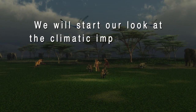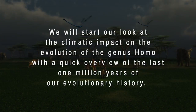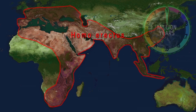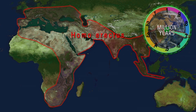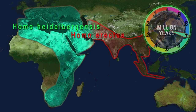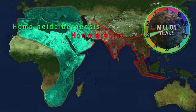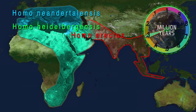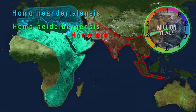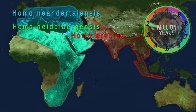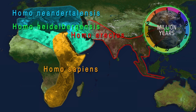We will start our look at the climatic impact on the evolution of the genus Homo with a quick overview of the last 1 million years of our evolutionary history. Around the 1 million year mark we would find Homo erectus ranging across parts of Africa into Europe and Asia. As we approach the 800,000 to 700,000 year mark we would find Homo heidelbergensis evolving out of the Homo erectus populations, especially on the western end of the Homo erectus range. As we approach the 300,000 year mark we would find Homo neanderthalensis evolving out of the Homo heidelbergensis populations in present-day Europe and western parts of the Middle East, basically the northern area of the Homo heidelbergensis range. As we approach the 200,000 year mark we would begin to find Homo sapiens appearing in eastern Africa, or the southern area of the heidelbergensis range.